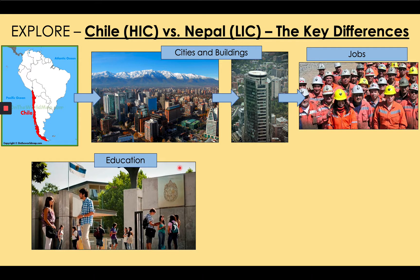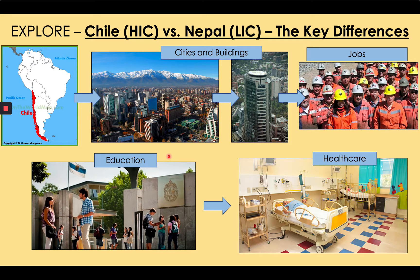More than 99% of people in Chile are literate — they can read and write. Healthcare in Chile is generally excellent. Chile has a life expectancy that puts it in the top quarter of all countries in the world. If you go to a hospital in Chile, you're likely to get excellent medical care using modern medicines and well-trained doctors. The hospitals themselves are modern and unlikely to collapse during an earthquake.